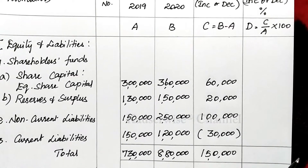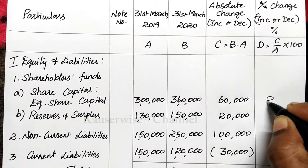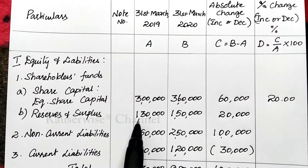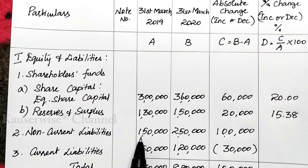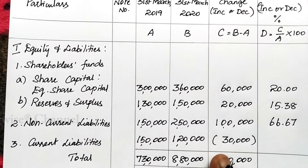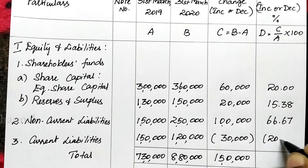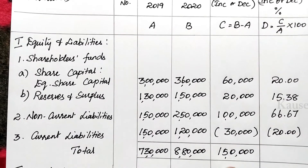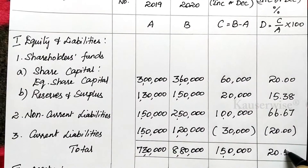For share capital: 60,000 divided by 3,00,000 into 100 = 20%. For reserves and surplus: 20,000 divided by 1,30,000 into 100 = 15.38%. For non-current liabilities: 1,00,000 divided by 1,50,000 into 100 = 66.67%. For current liabilities: minus 30,000 divided by 1,50,000 into 100 = minus 20%, entered within brackets. For total: 1,50,000 divided by 7,30,000 into 100 = 20.55%.